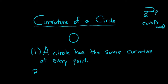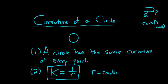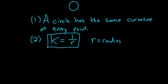And the second remark is the formula for the curvature of a circle. It's given by K equals 1 over R, where R is the radius of the circle. And this should make some sense intuitively.